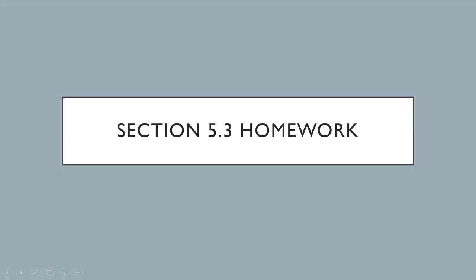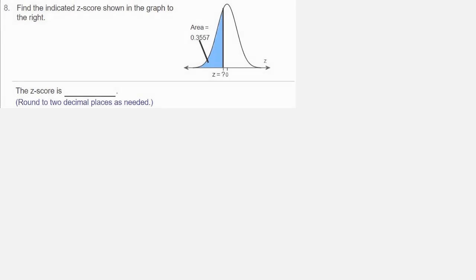We're looking at homework from section 5.3, question number 8. Find the indicated z-score shown in the graph to the right. The area in the shaded region is 0.3557.